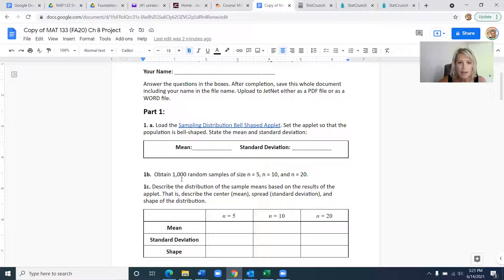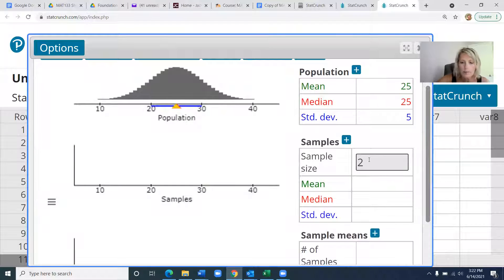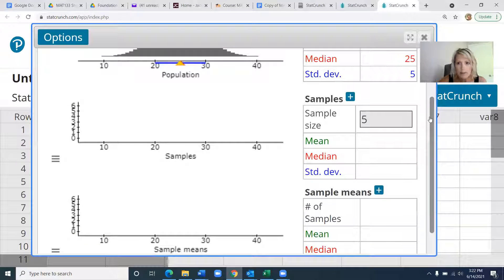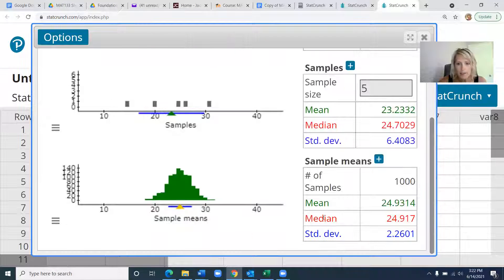Then it says obtain a thousand random samples of size 5, size 10, size 20. Here you can see I'm going to change the middle one. I'm going to say sample size of 5. At the top of my screen, I have to scroll up and hit a thousand times. When I do that, the very bottom says I did a thousand samples of size 5. The bottom one is the one that you're going to record this mean and this standard deviation.